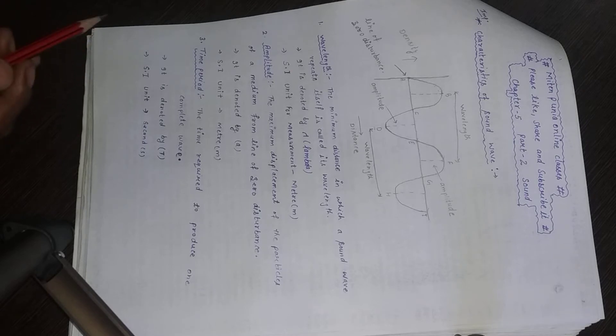The SI unit of time period is seconds (S). The fourth characteristic is frequency. Frequency means how many complete waves are produced in one second. The number of complete waves in one second is known as frequency. We denote it by small F or the Greek letter nu, and its unit is hertz (Hz).